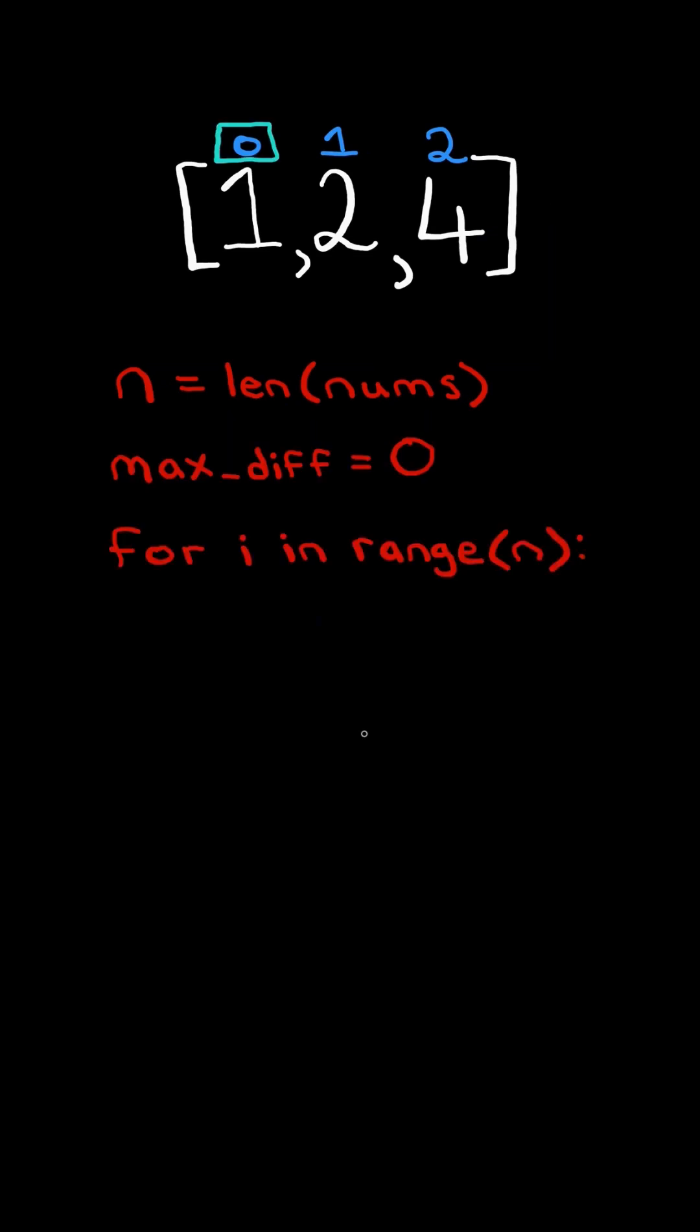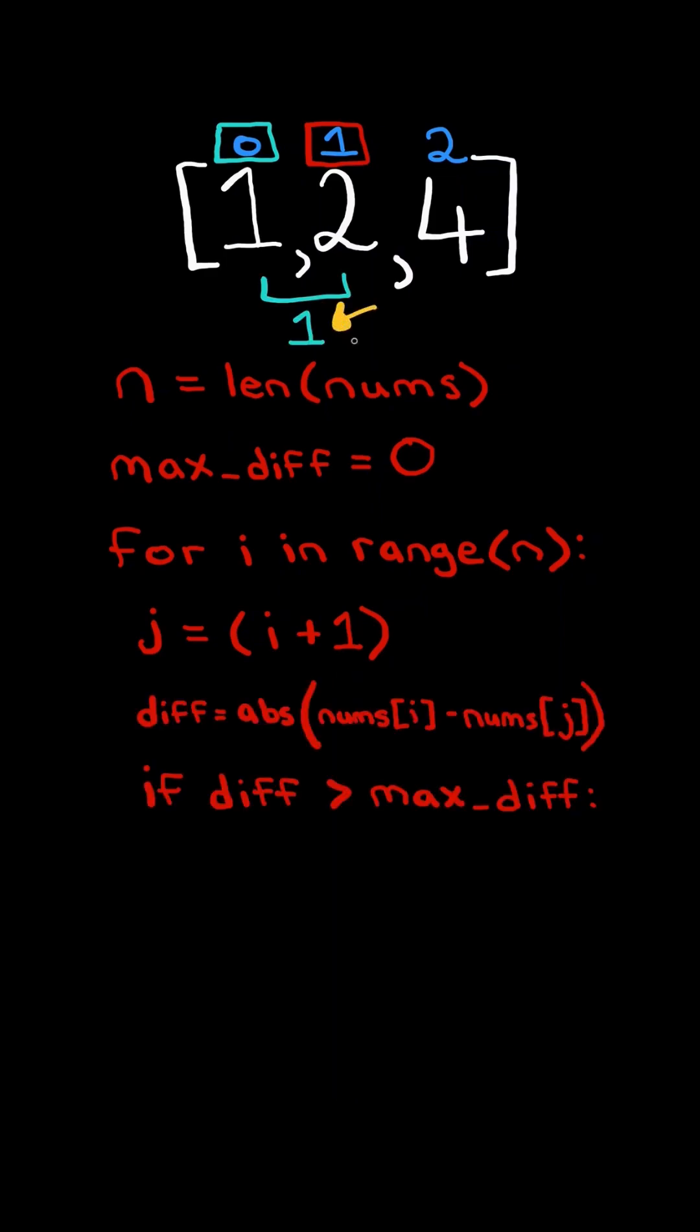We start with the first index. We add 1 to get its neighbor. We calculate the absolute difference between the numbers. And if the difference is greater than maxDifference, we update maxDifference. And we continue.